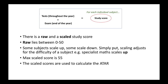Looking at the study score part of this equation, there is a raw and a scaled study score. The raw score for each subject lies between 0 and 50. Some subjects then scale up and some scale down. Simply put, scaling is just adjusting for the difficulty of a subject — if a subject is particularly difficult, then whatever raw score the student receives will just be moved up by some number of points. The max scaled score is 55, and it is these scaled scores that are used to calculate the ATAR.